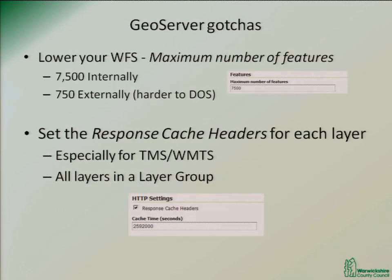GeoServer has a couple of gotcha tips. Lower your WFS maximum number of features — the default is 100,000, meaning someone can get up to 100,000 features returned, which will kill any browser and probably your server. Seven and a half thousand is what we set it to for internal systems; for external systems we're probably going to set it to 750. That also makes it harder for someone to perform a denial-of-service attack.